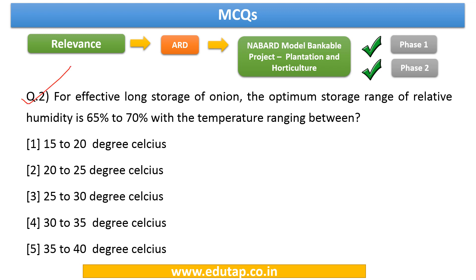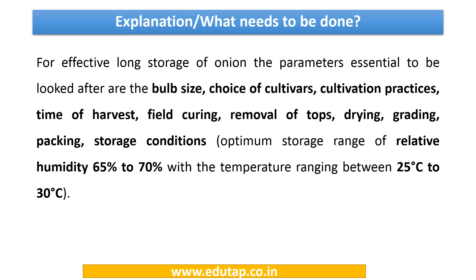Question two: for effective long storage of onion, the optimum storage range of relative humidity is 65% to 70%, with the temperature ranging between how much? The answer to this question is 25 to 30 degrees Celsius. There are two data points to derive from this question: the relative humidity of 65% to 70%, and the effective temperature range of 25 to 30 degrees Celsius. Kindly pause the video and go through this explanation.